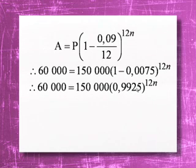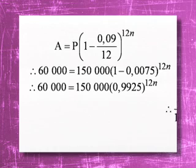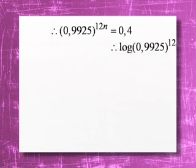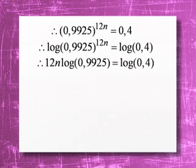One minus 0.0075 gives 0.9925. Continuing, we divide both sides by 150,000. The calculation 60,000 over 150,000 gives 0.4. Now we need to solve for n — as mentioned, we take logs on both sides. Applying logs to both sides is the key step here.